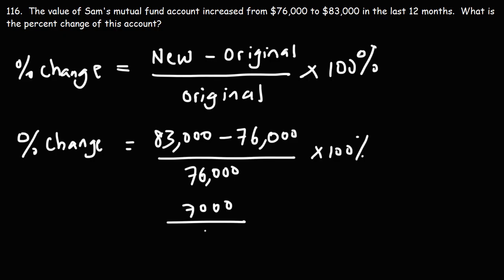So we're going to take the change, and this is positive $7,000. We'll take the change, divide it by the original amount,